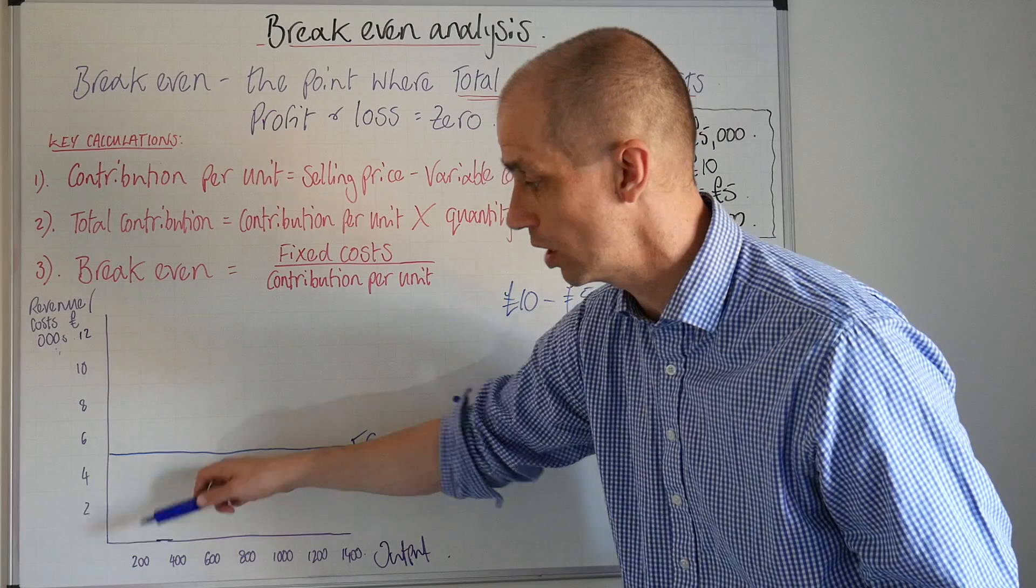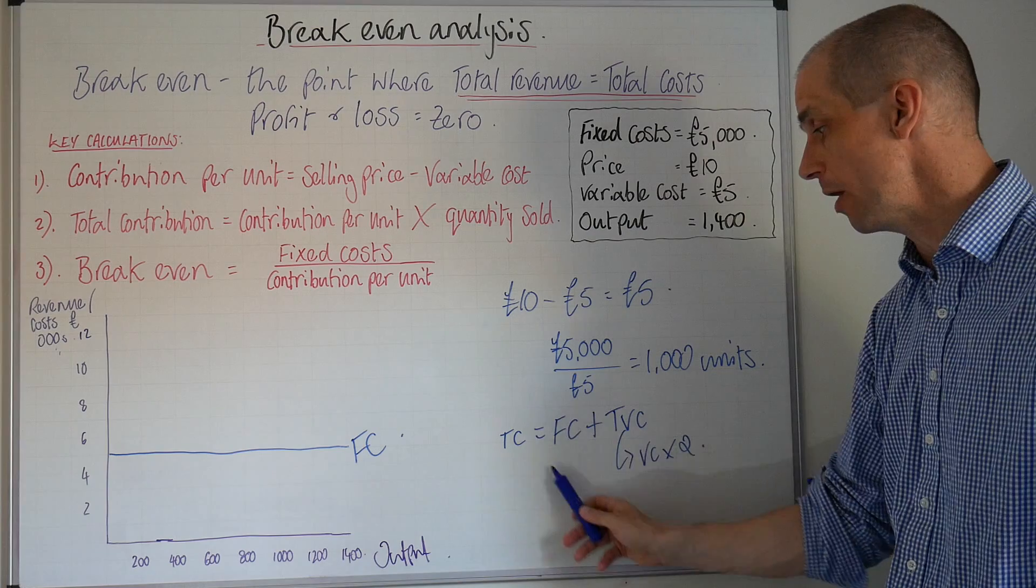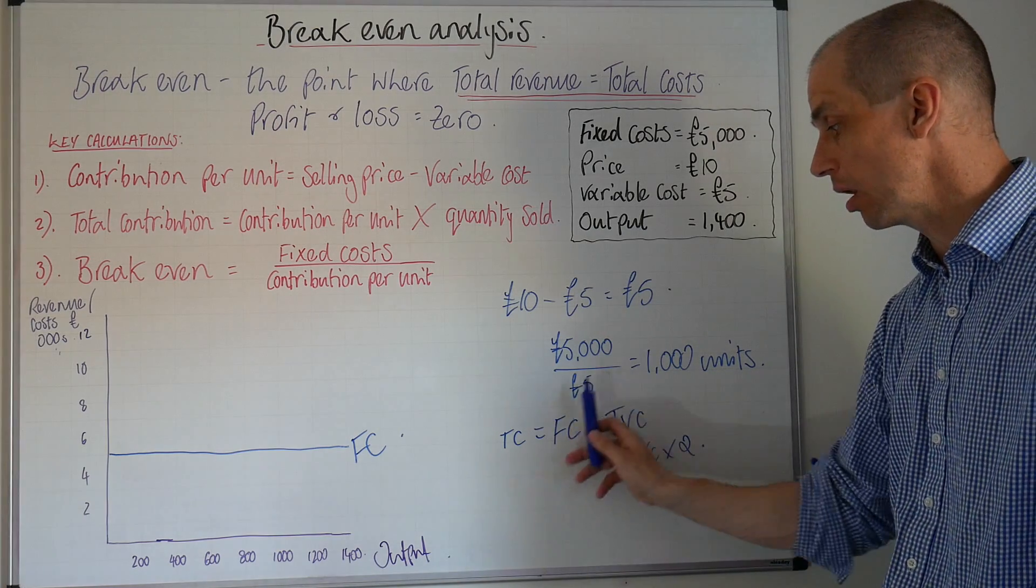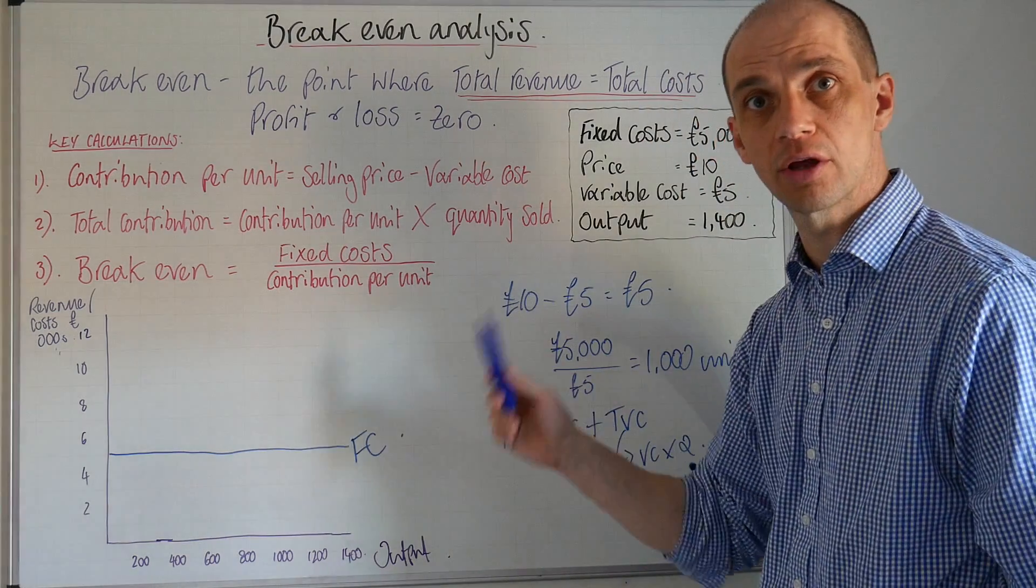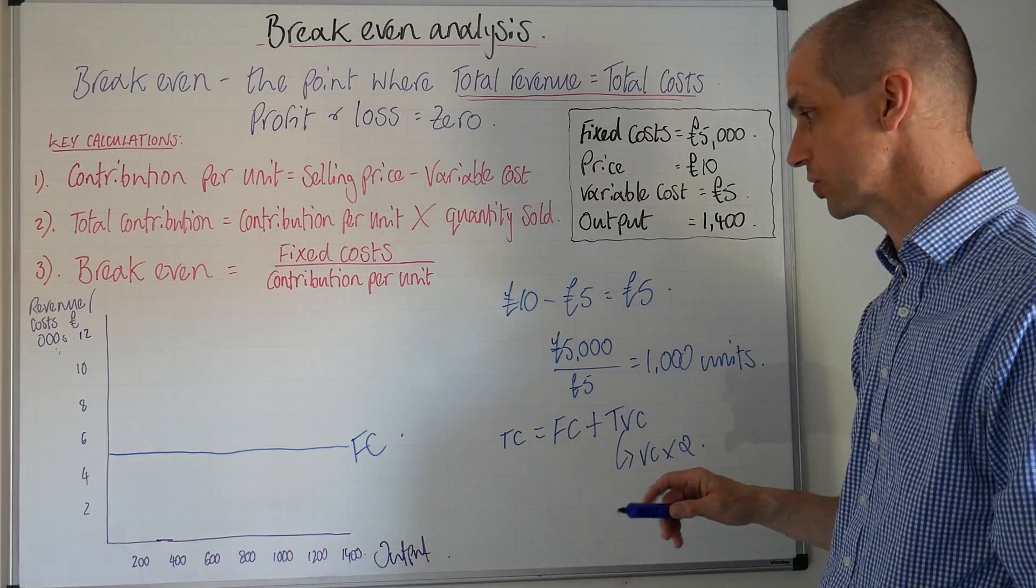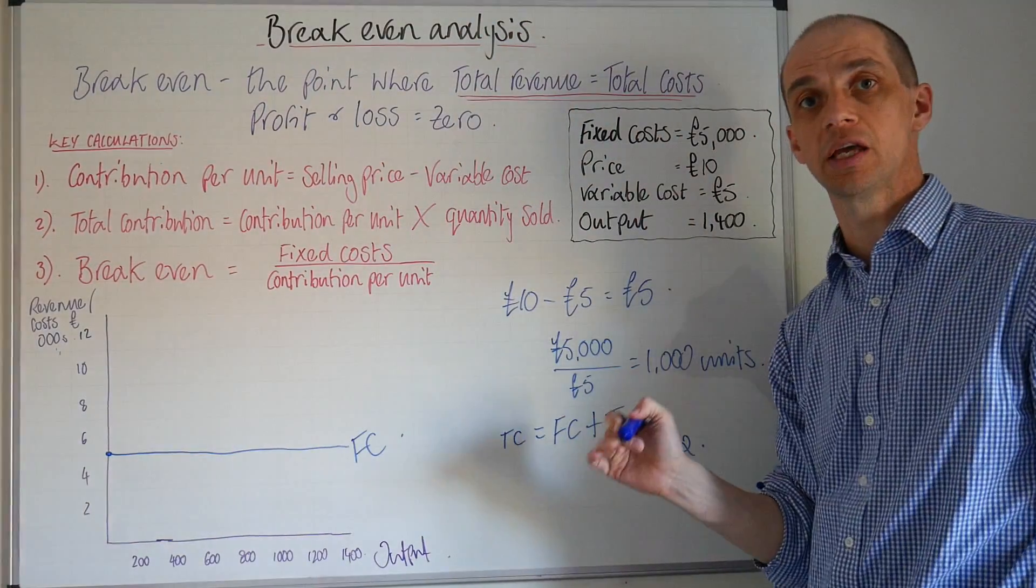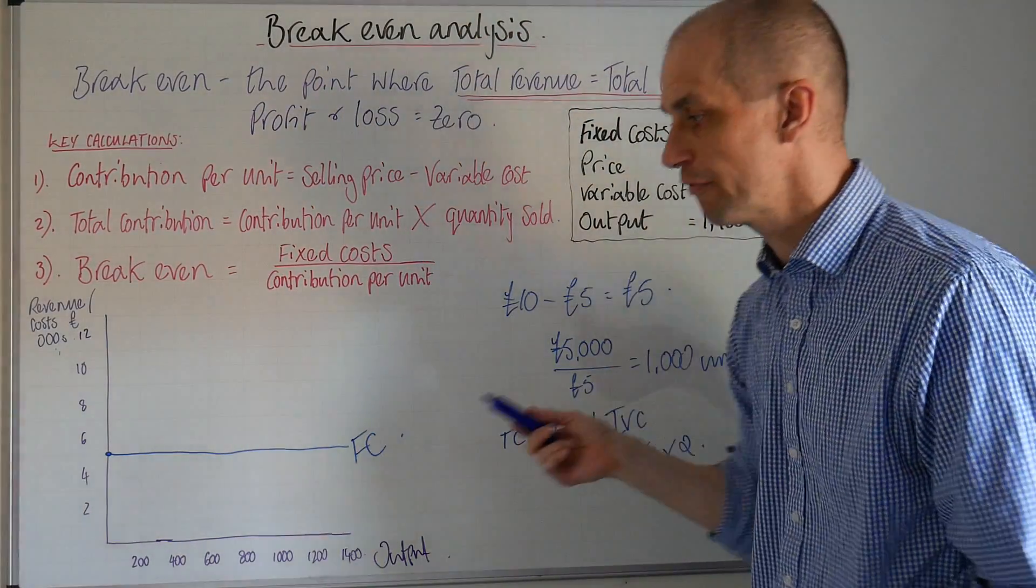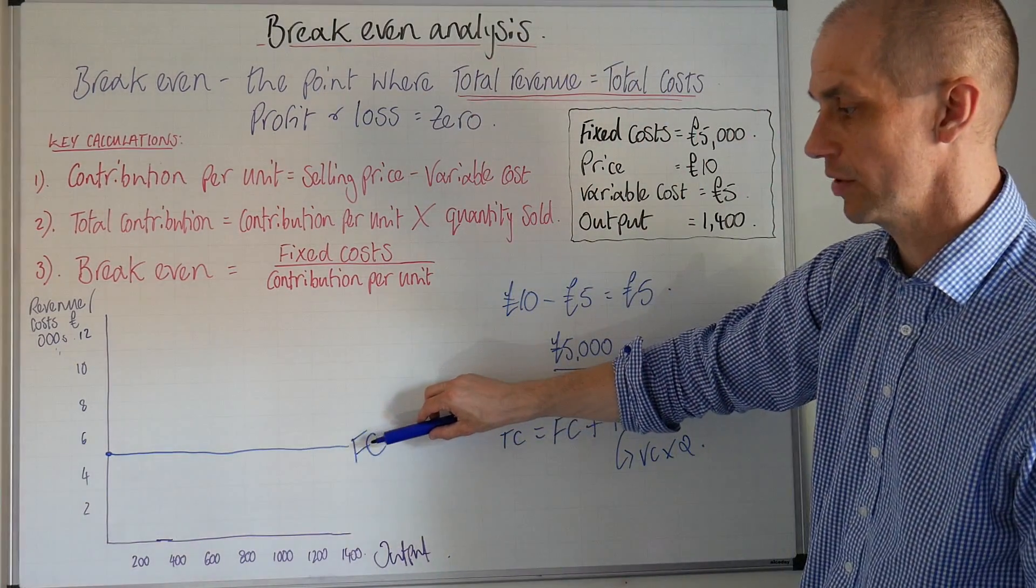So it'd be £5 times 200, but we are going to add this on because remember the fixed cost plus the total variable cost will give us the correct level for our total cost. So we will therefore start at this point here. Incidentally, if we did just draw in the variable cost it would be represented down here.